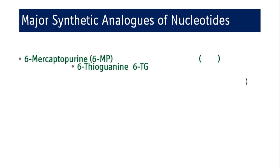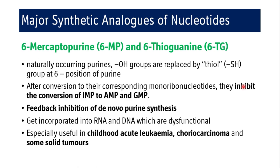6-Mercaptopurine and 6-thioguanine: the OH group at the 6th position of purine is replaced by a thiol (SH) group. After conversion to their corresponding monoribonucleotides, they inhibit the conversion of inosine monophosphate to adenosine monophosphate and guanosine monophosphate. There is also feedback inhibition of de novo purine synthesis. They get incorporated into RNA and DNA, rendering them dysfunctional. These agents are especially useful in childhood acute leukemia and also find application in choriocarcinoma and some solid tumors.